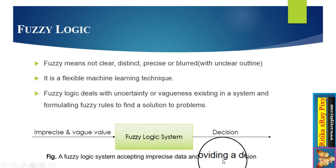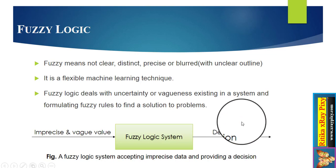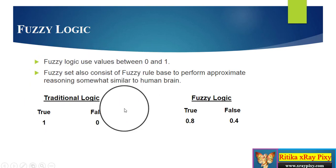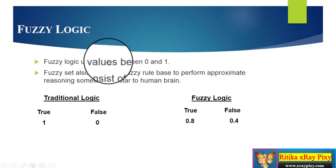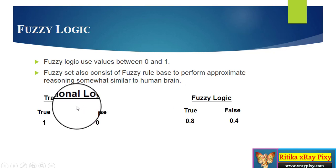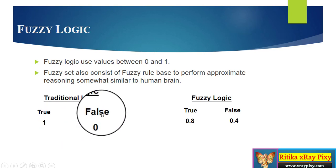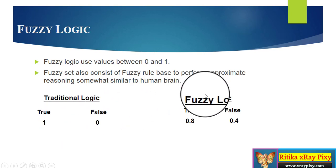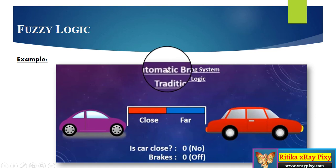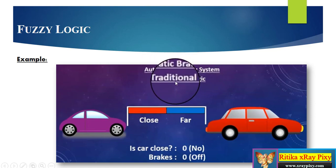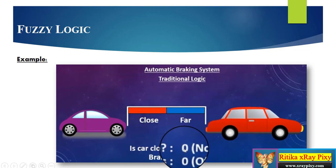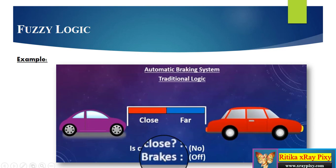Let's see how fuzzy logic works. Fuzzy logic uses values in between 0 and 1, whereas traditional logic uses only true (1) or false (0). For example, in an automatic braking system, for traditional logic — is the car close? No, so we represent it with 0, meaning brakes are not applied.